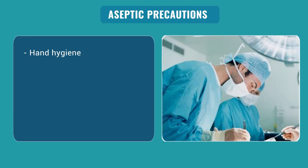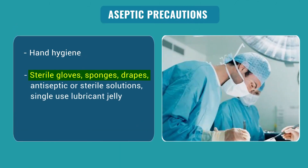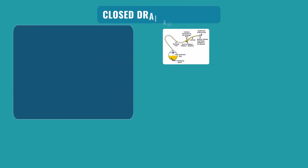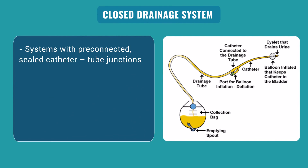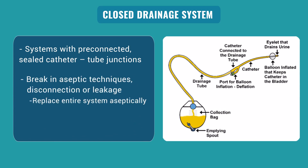While inserting catheters, strict aseptic precautions should be followed, including thorough hand hygiene and use of sterile gloves, sponges, drapes, antiseptic or sterile solutions, and single-use lubricant jellies. Once placed, catheters should be secured properly. Another prevention strategy is use of a closed drainage system — systems with pre-connected sealed catheter-tube junctions whose continuity should be maintained throughout. Any break in continuity should prompt immediate replacement. Urine samples should be collected from the collection port under full aseptic precautions.